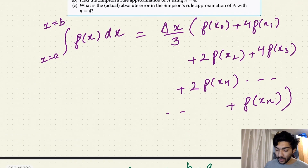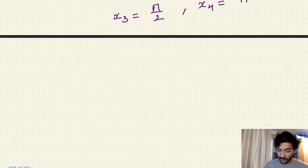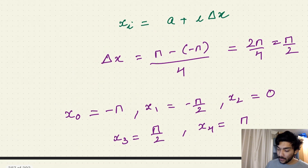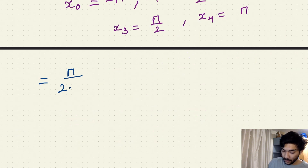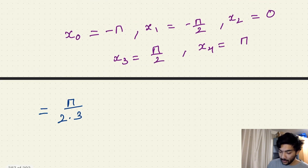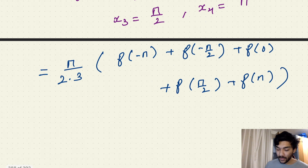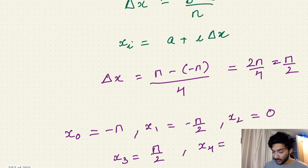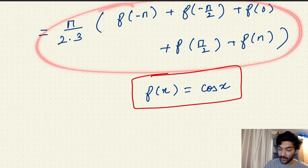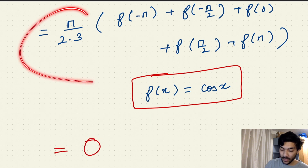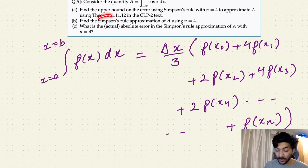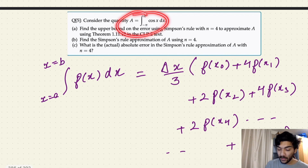Now with these x_i values we apply the Simpson's rule approximation formula. Delta x over 3 is (π/2) divided by 3, which equals π/6. Then we compute: π/6 times [f(-π) + 4·f(-π/2) + 2·f(0) + 4·f(π/2) + f(π)], where f(x) = cos(x). Evaluating this expression gives a final answer of 0. So the Simpson's rule approximation of this definite integral using n equals 4 is 0.